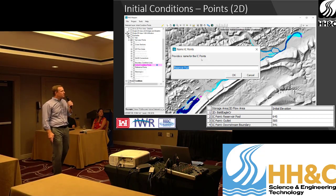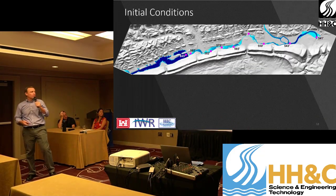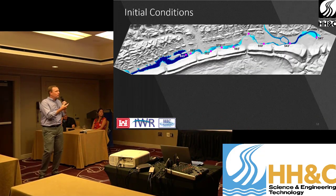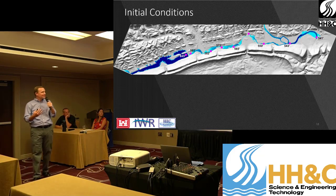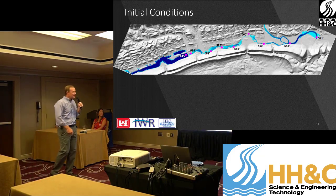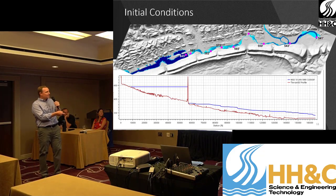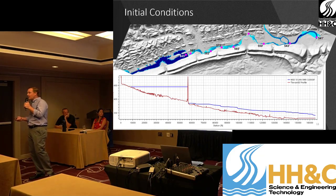Let's get into the meat of this — why is this cool and how does it work? Here's my example of an idealized river system where I've got 10 gauges within 10 miles. It's a river system we all wish we had. I can go in and set my water surface at each of these gauges and get an initial conditions water surface that looks pretty great.